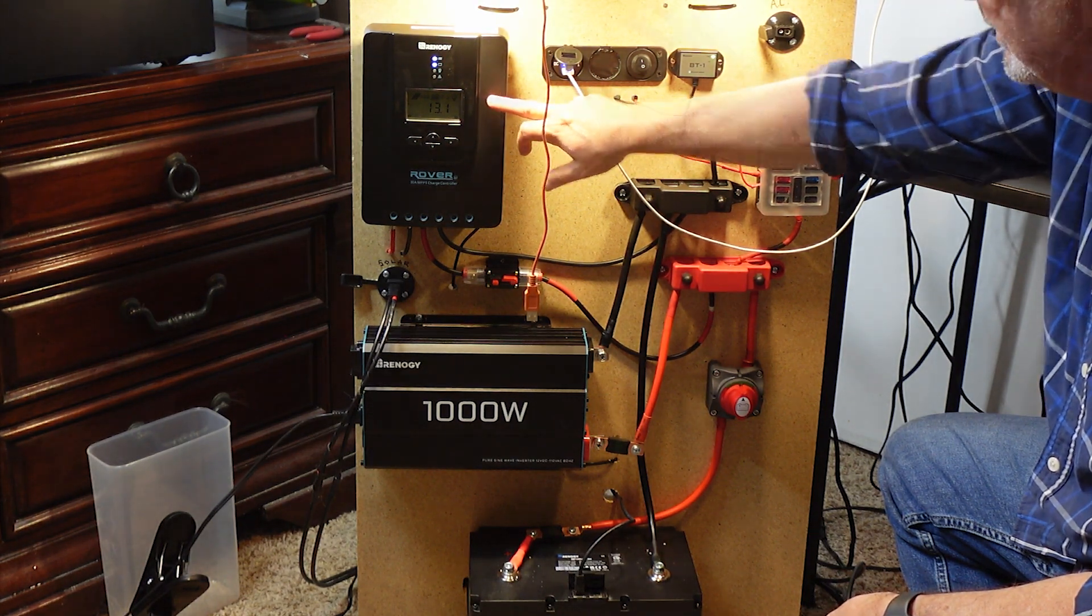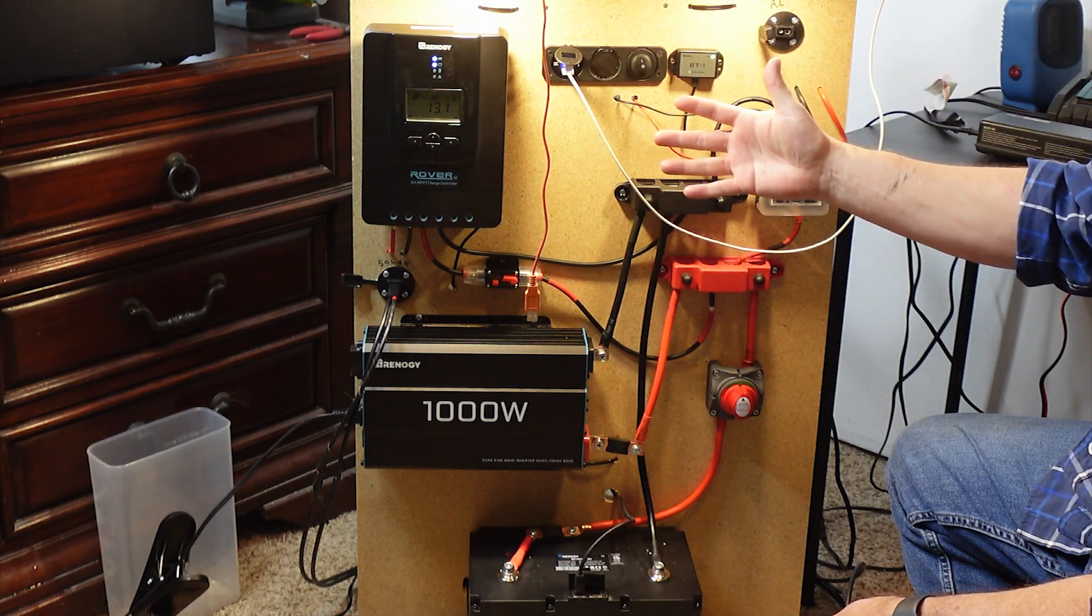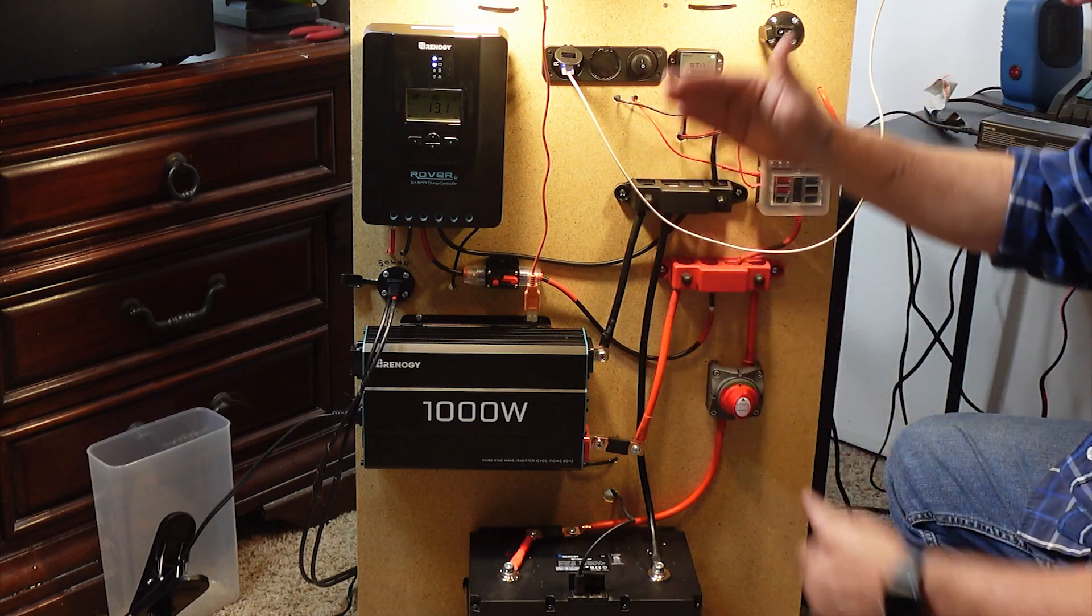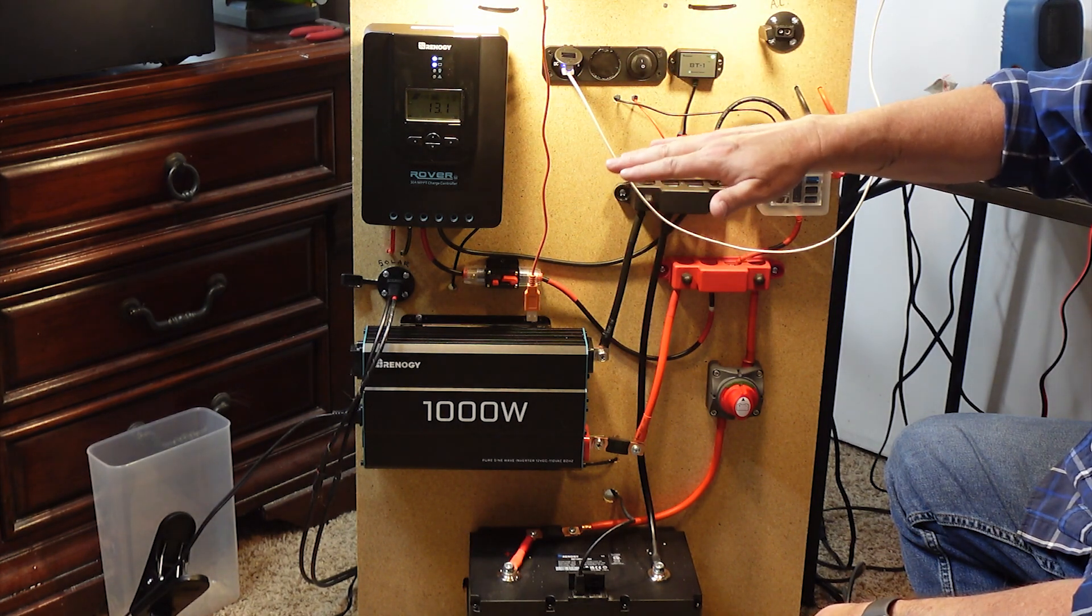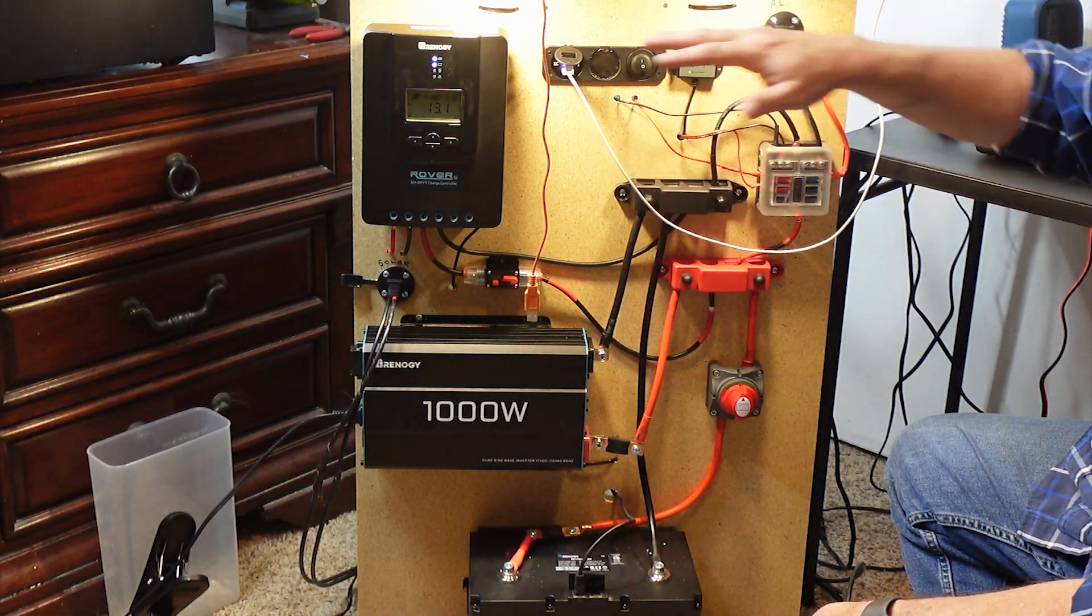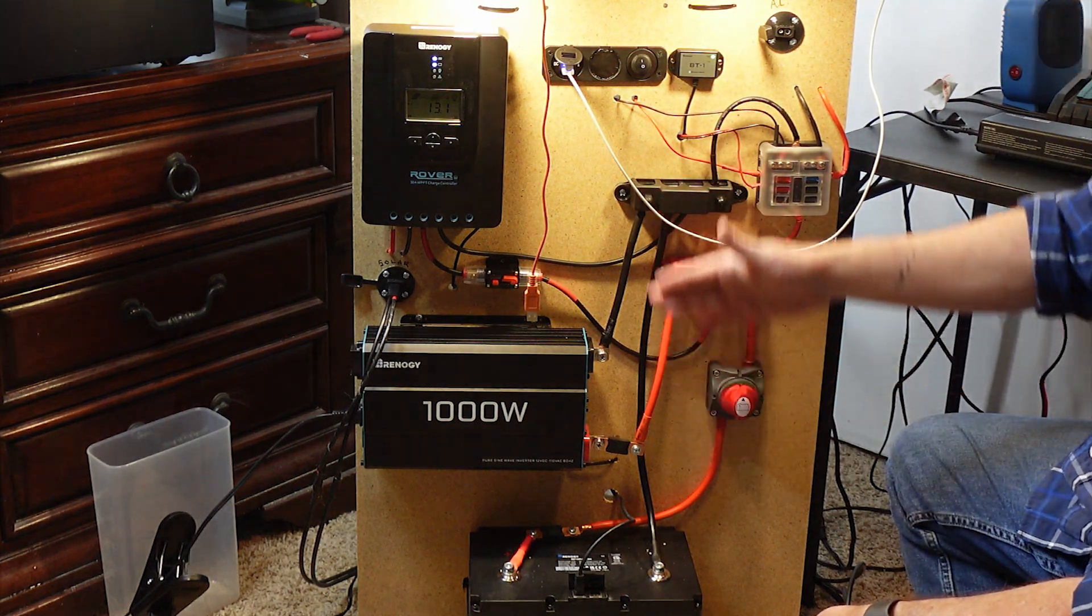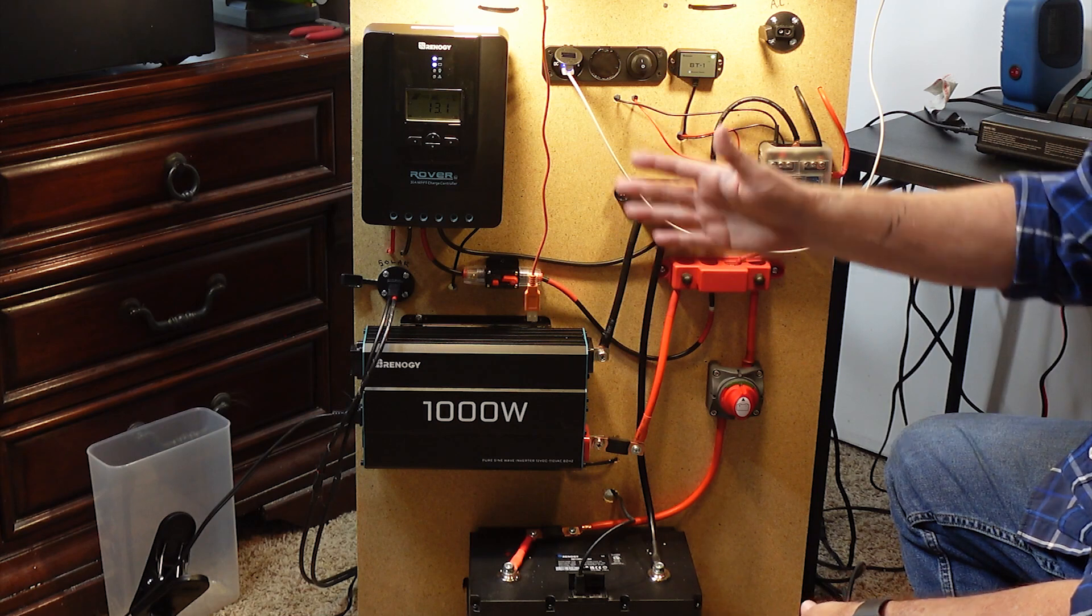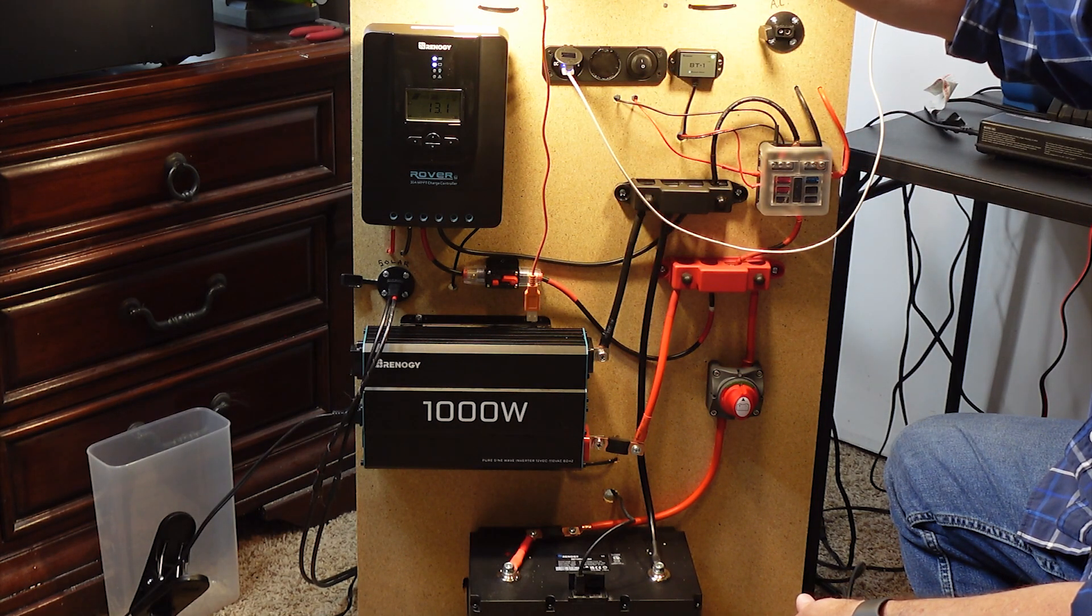And it's really up to you and what your needs are, or what your wants are for that setup. You need to go through a list of things that you're going to run in an SHTF situation, how long you're going to run them, and how much energy that's going to take. And that will tell you how many batteries that you need—100 amp hour batteries, or maybe a 240 amp hour battery—how many solar panels you need.